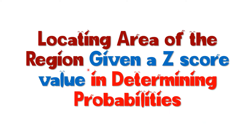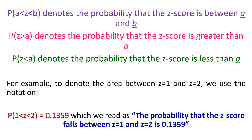Now let's proceed to locating the area of a region given a z-score value in determining probabilities. First, let me introduce how to use probability notation. The notation P(a < z < b) denotes the probability that the z-score is between a and b. The notation P(z > a) denotes the probability that the z-score is greater than a. And P(z < a) denotes the probability that the z-score is less than a.